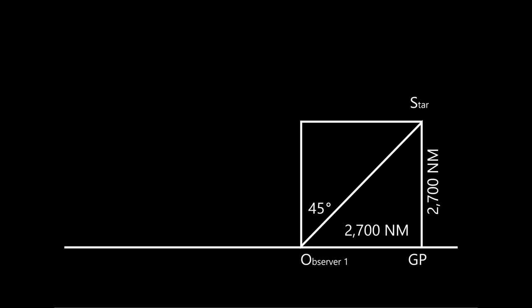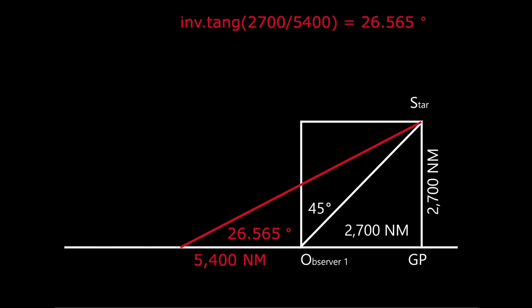Now, we take a second measurement at the distance of 2700 nautical miles from the first. So we are at 5400 nautical miles from the GP. The measurement will be 63.435 degrees because the inverse tangent of 2700 over 5400 equals 26.565 degrees. Subtract that from 90 degrees and you get 63.435 degrees.